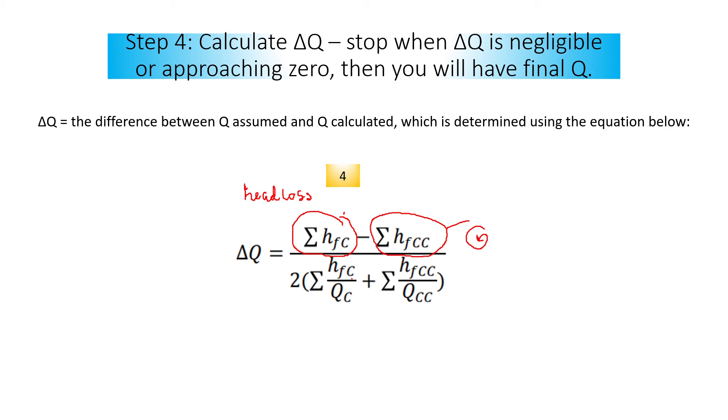hfc, head loss for clockwise, divided by qc. qc is flow summation, also clockwise, plus summation of head loss counterclockwise.